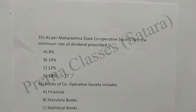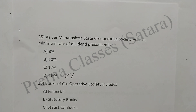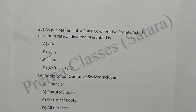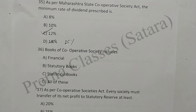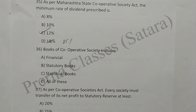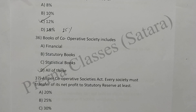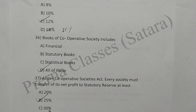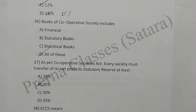Question 35: As per Maharashtra State Cooperative Societies Act, the minimum rate of dividend prescribed is 12%. Option C is correct. Question 36: Books of a cooperative society include financial, statutory, statistical, and all of these. Option D is correct. Question 37: As per cooperative society rules, every society must transfer its net profit to statutory reserve at least 25%. Option B is correct. Question 38: ECCS means Employee Credit Cooperative Society. Option A is correct.